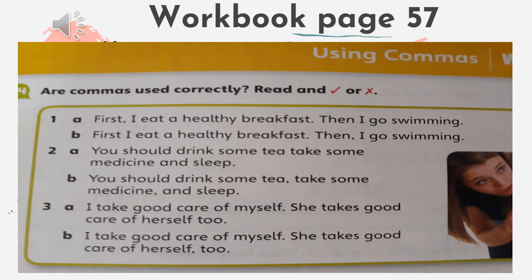Then number two. Letter A: 'You should drink some tea, take some medicine and sleep.' Letter B: 'You should drink some tea, take some medicine and sleep.' The correct answer is letter B because we use a comma between items in a list. And then number three: the correct answer is letter B because we use a comma before 'too' at the end of a sentence.